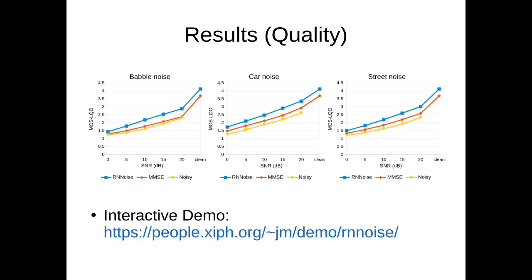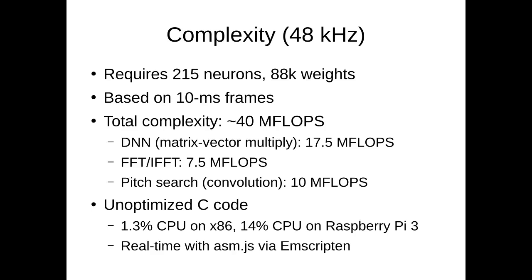Now let's look at the complexity of RNNoise for a 48 kilohertz mono input signal. RNNoise uses 215 neurons, which means 88,000 weights, and it processes audio in frames of 10 milliseconds, which means we have 100 frames per second. The total complexity in RNNoise is around 40 megaflops.